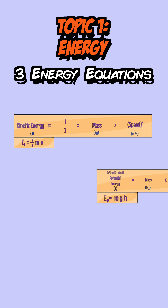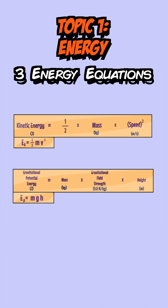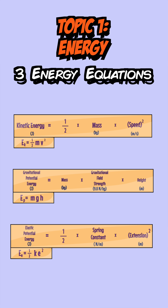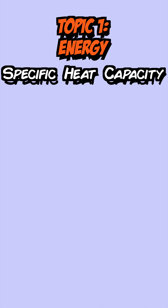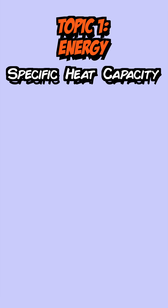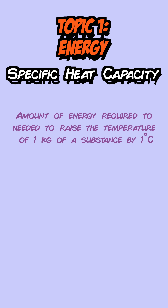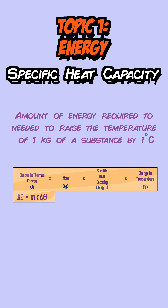Kinetic energy, gravitational potential energy and elastic potential energy can all be calculated using equations. Next, we have specific heat capacity, which is defined as the amount of energy required to increase the temperature of one kilogram of an object by one degree Celsius. The equation for this is: energy equals mass times specific heat capacity times change in temperature.